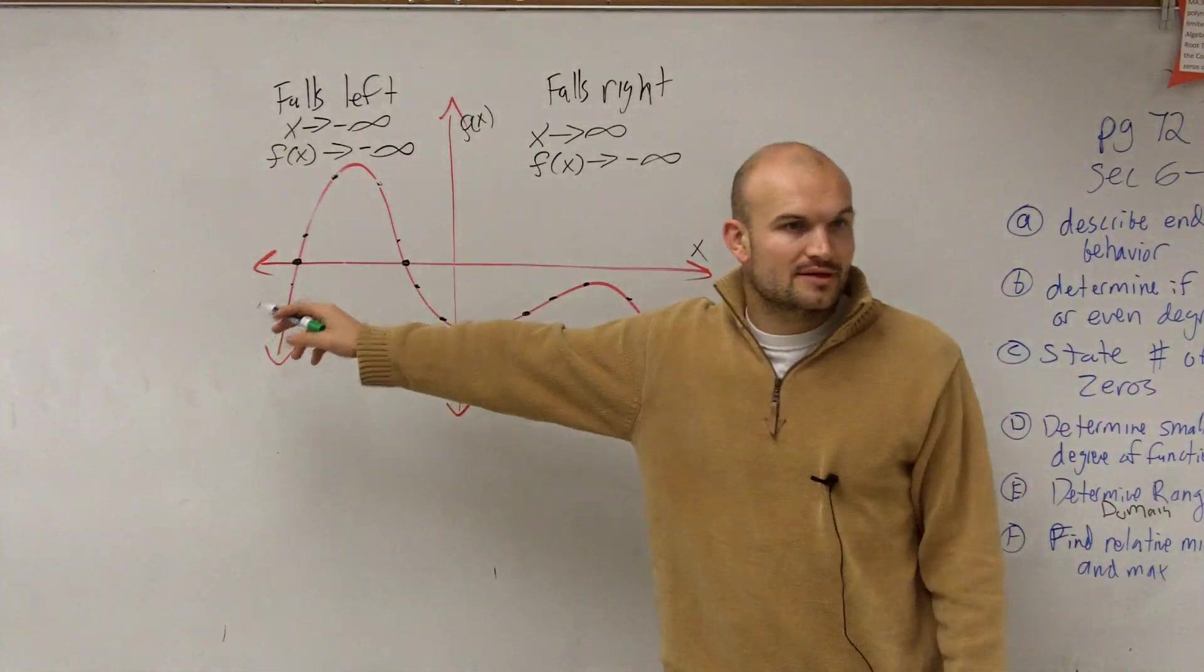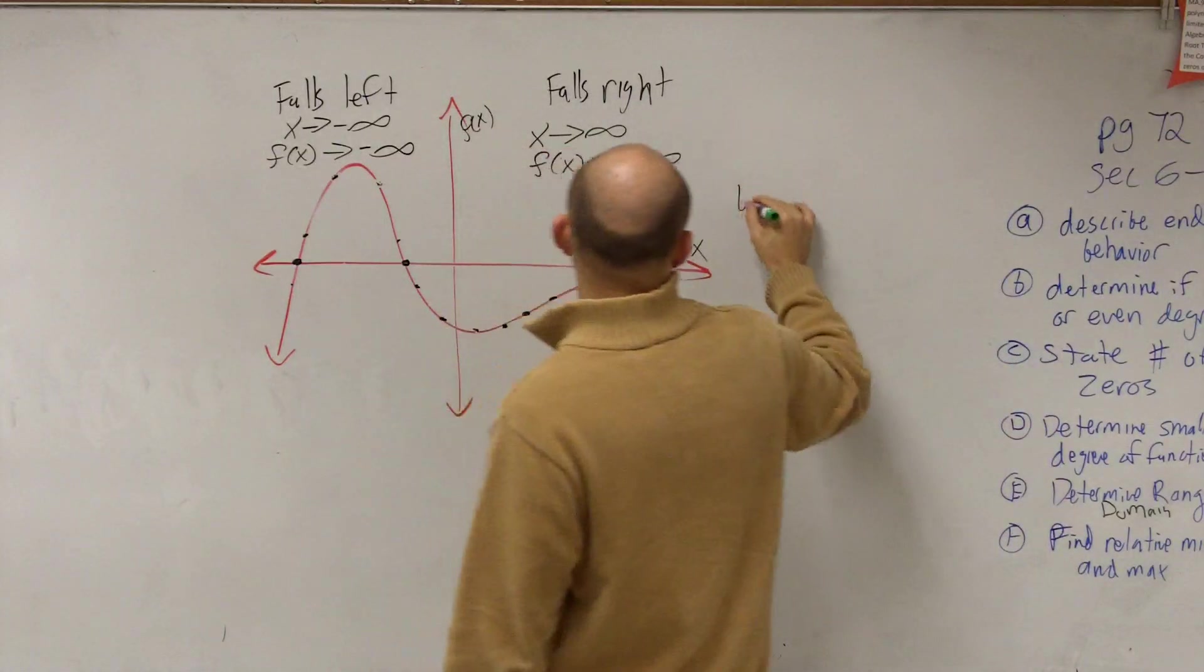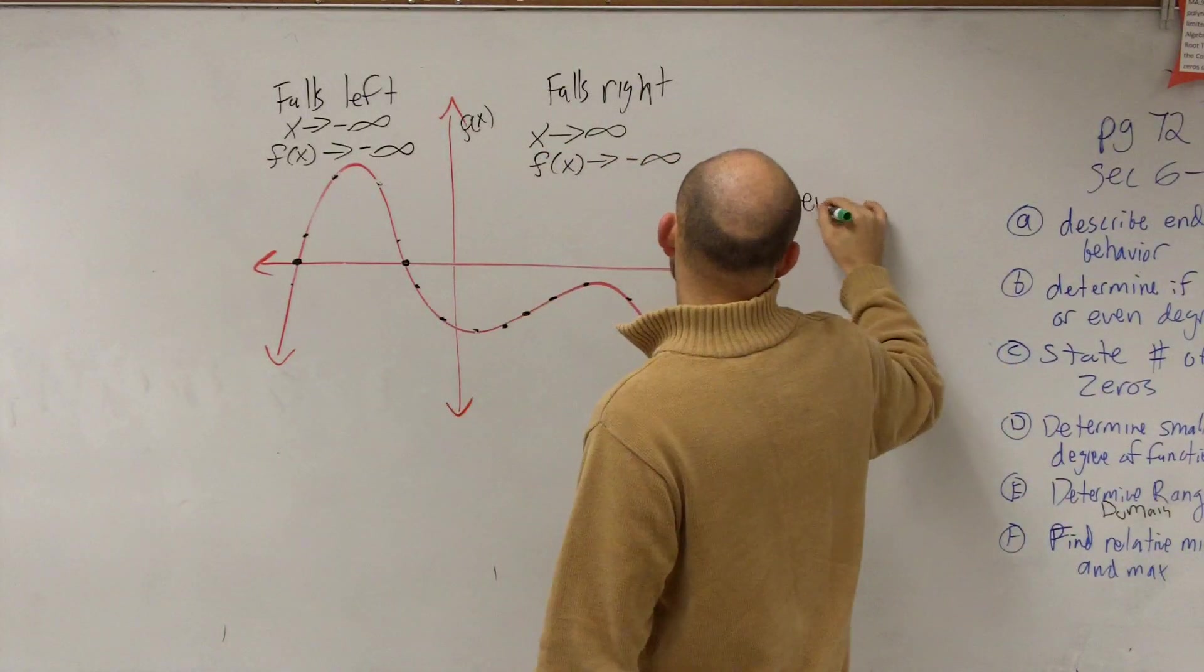So therefore, how many zeros do we have? Two. So therefore, our degree of this function must be even. So you're going to say B is going to be an even degree.